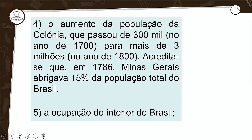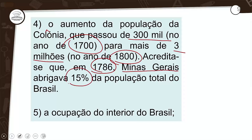Quarta consequência: o aumento da população na colônia, que passou de 300 mil — em 1700 — para mais de 3 milhões já em 1800. Acredita-se que no ano de 1786, Minas Gerais abrigava em torno de 15% de toda a população do Brasil.